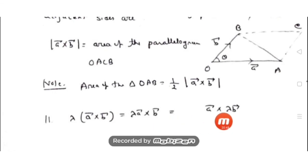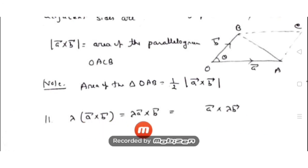Also note that a scalar lambda can be taken inside or outside the cross product: lambda(a-bar cross b-bar) = (lambda a-bar) cross b-bar = a-bar cross (lambda b-bar). These are all the properties of the cross product. Study the definition and properties carefully, as they will be used in the next exercises.